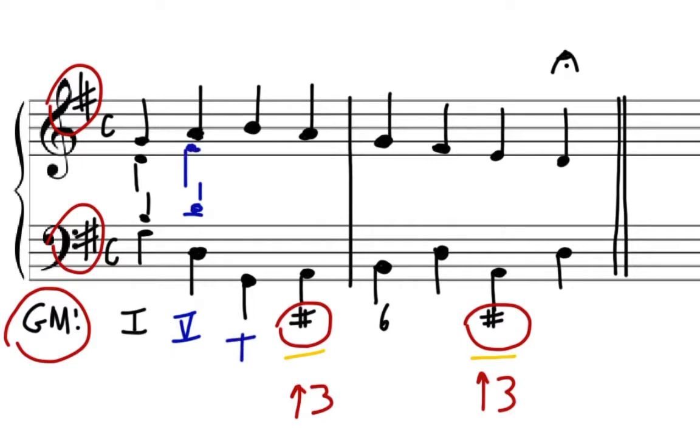The next chord has G in the bass, that's tonic. It's a root position tonic chord. Let's keep the D in the tenor, maintain the common tone, and let's just move the alto up to G so the part writing stays nice and smooth.